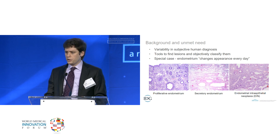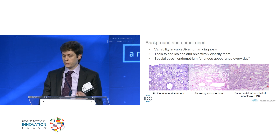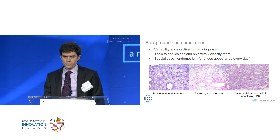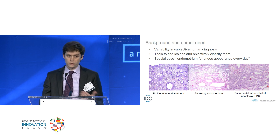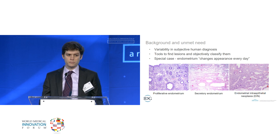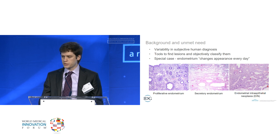One of the difficulties of the endometrium in particular is that the background glands from which we're trying to distinguish this lesion are constantly changing throughout the menstrual cycle. On the left is proliferative endometrium — a biopsy taken earlier during the menstrual cycle. In the center panel is secretory endometrium, with a variety of appearances. And on the right is the EIN lesion, which we're trying to distinguish.